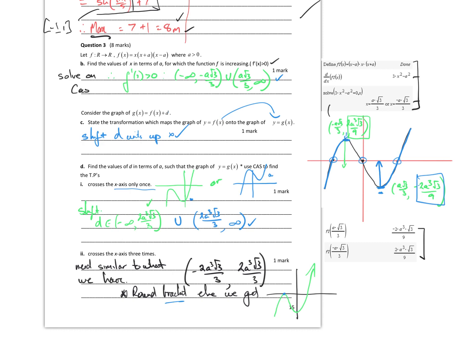Part B is not yet part of the course — not part of what we've covered so far. But if we were to give you that graph, calling turning points negative 1, 3 and 1, negative 2, we would expect you to be able to do parts C and D — in terms of shifting the graph up and down or left and right, such that there's only one positive intercept or two negative intercepts.